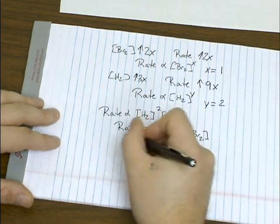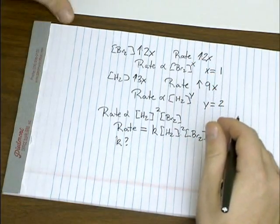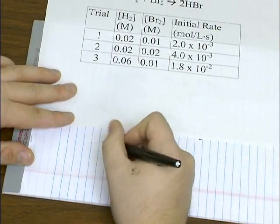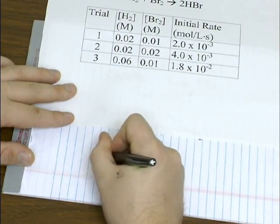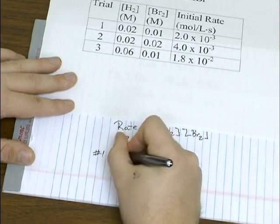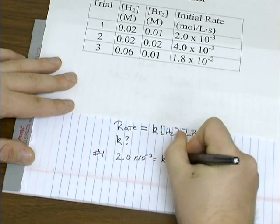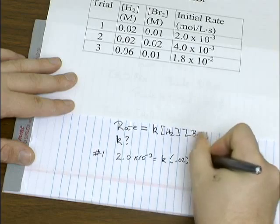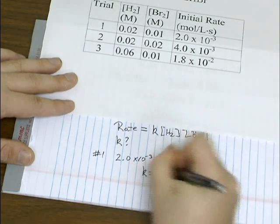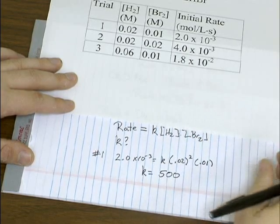And we can calculate the value of K by going back and picking one of these trials. Say number one. And plug in the data that we're given. So you plug in the rate. It's going to equal K times 0.02 squared times 0.01. So you solve for K and you get 500.